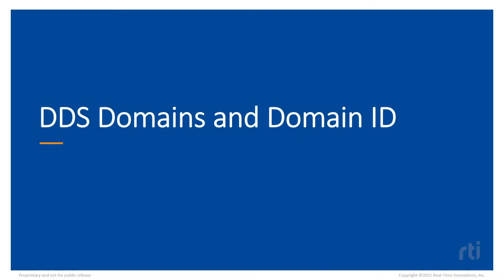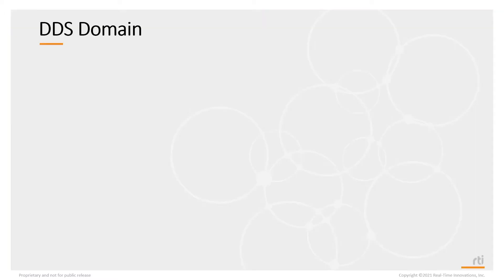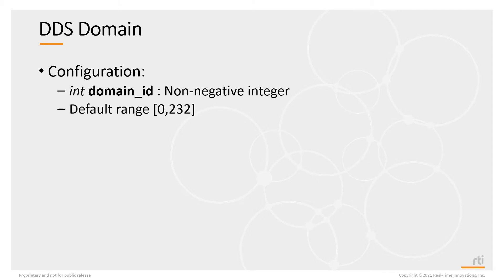We're going to talk about a very basic concept in DDS called domains and the ID that is used to identify domains. A DDS domain is configured with an integer called the domain ID. This is a non-negative integer with a default range of 0 to 232. Why 232? Well, we'll find out in another slide.